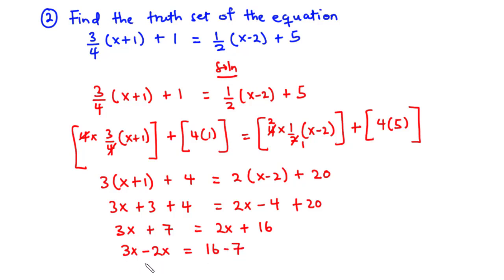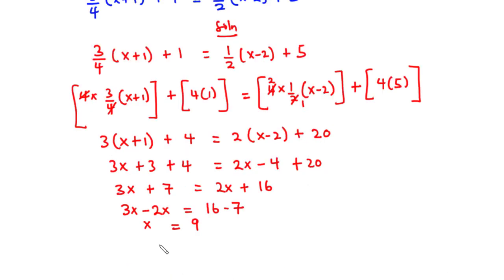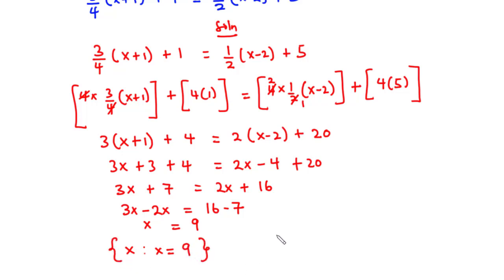This becomes x equals 9. So x is equal to 9. Because we are asked to find the truth set of the equation, we say the truth set is: x such that x equals 9. This is how to find the truth set of a linear equation. Let's solve some more examples.